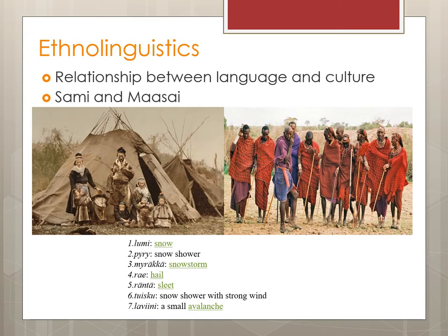Another field in linguistics is ethnolinguistics, where we look at the relationship between language and culture. For example, among the Sami people, who live in an area where snow is a constant part of their lives, they have over 200 words to describe snow.